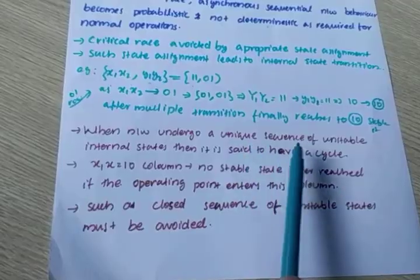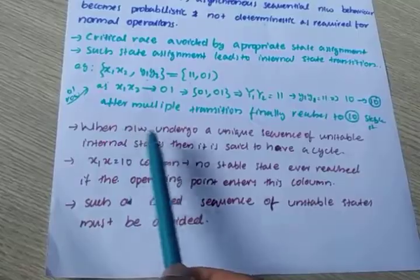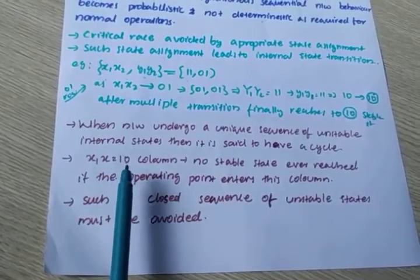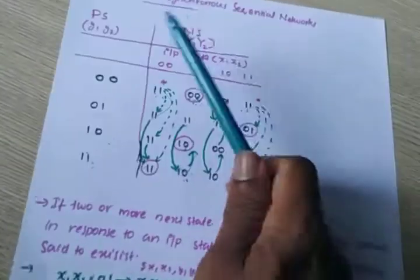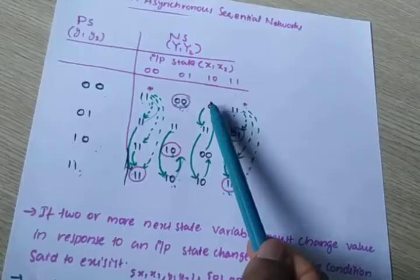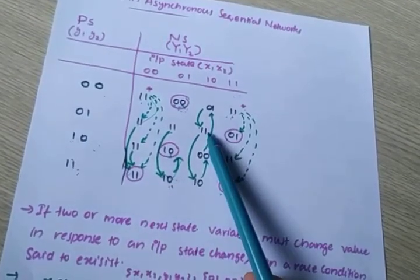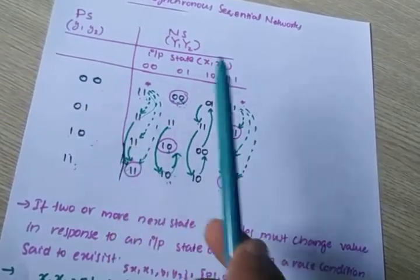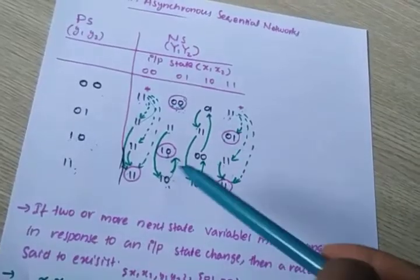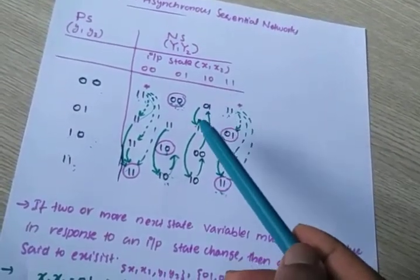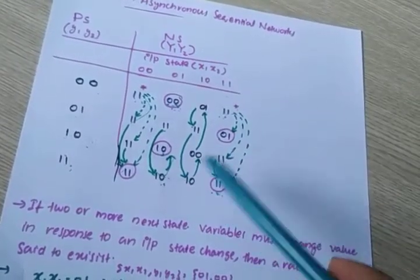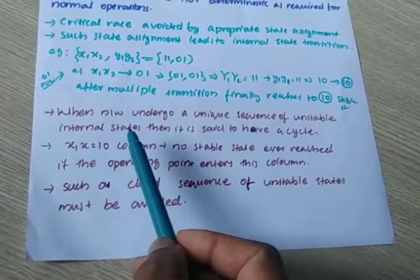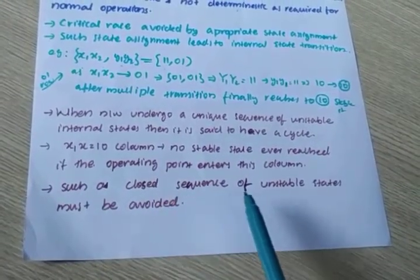When a network undergoes a unique sequence of unstable internal states, it is said to have a cycle. For example, in column x1, x2 = 1, 0, there is no stable state: 0,1 → 1,1 → 1,0 → 0,0 → 0,1, and it cycles indefinitely through unstable states. If the system goes through unstable states in a cyclic loop manner, it is called a cycle. Such a closed sequence of unstable states must be avoided.